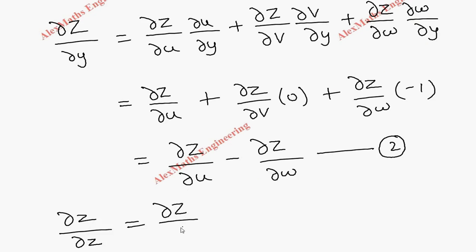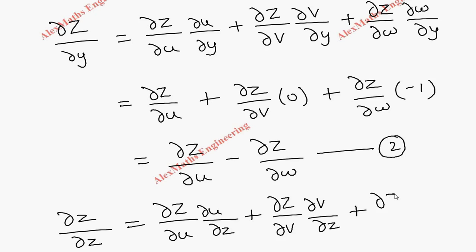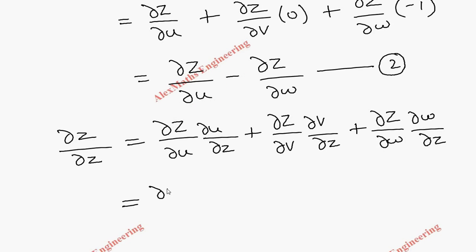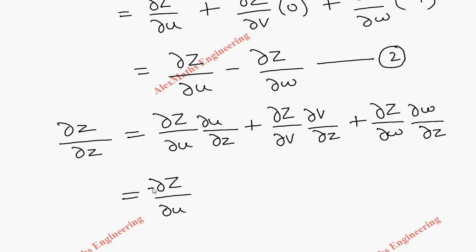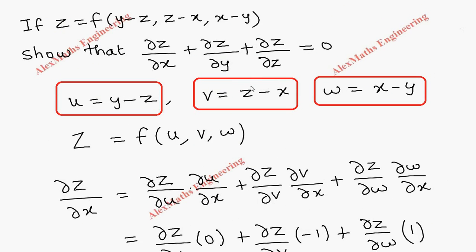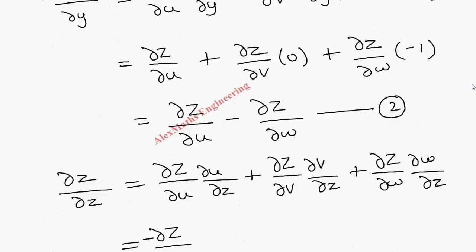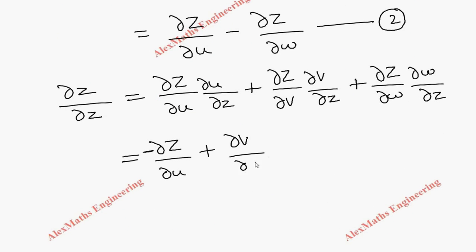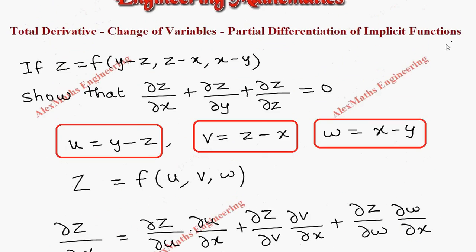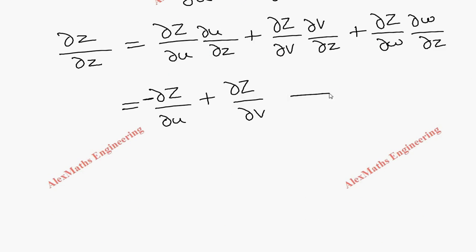Similarly, ∂Z/∂z equals ∂Z/∂u times ∂u/∂z plus ∂Z/∂v times ∂v/∂z plus ∂Z/∂w times ∂w/∂z. The partial derivative of u with respect to z is minus 1, so the first term is minus ∂Z/∂u. The partial derivative of v with respect to z is 1, so the second term is plus ∂Z/∂v. The last term: w with respect to z gives 0, so it does not count. Let this be expression 3.